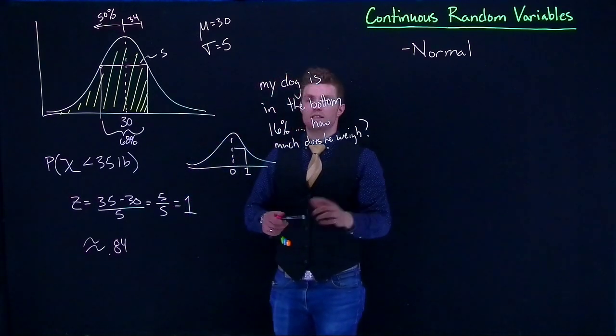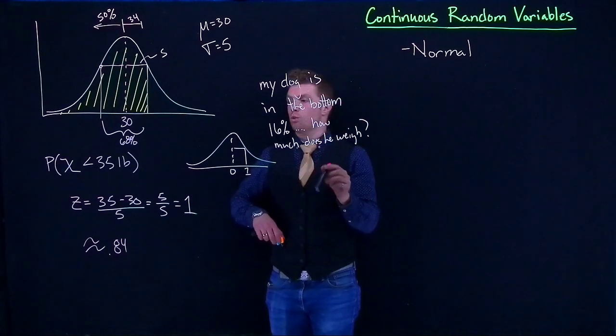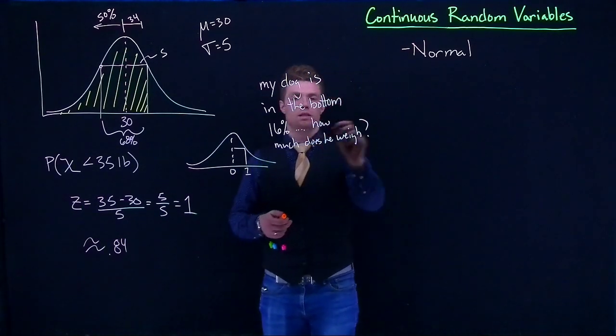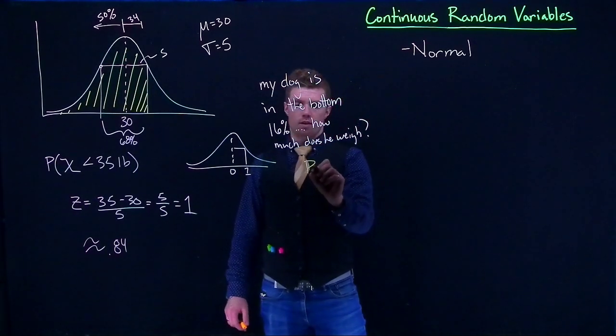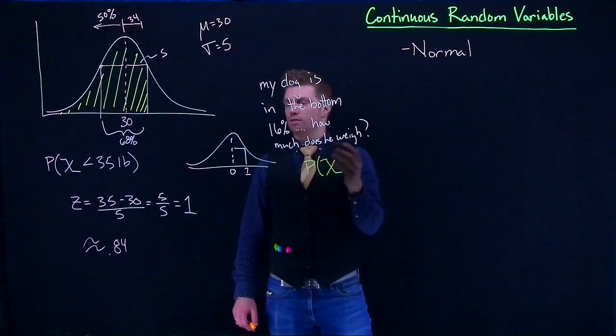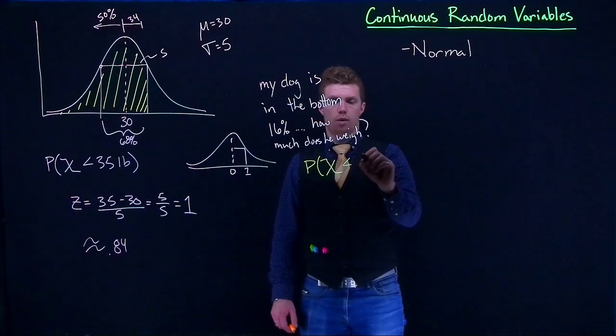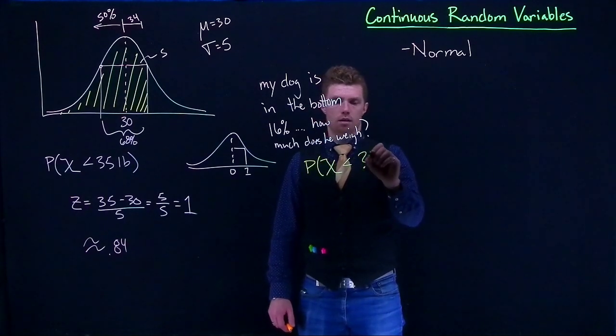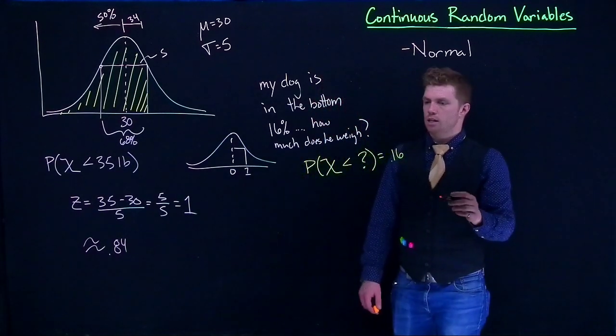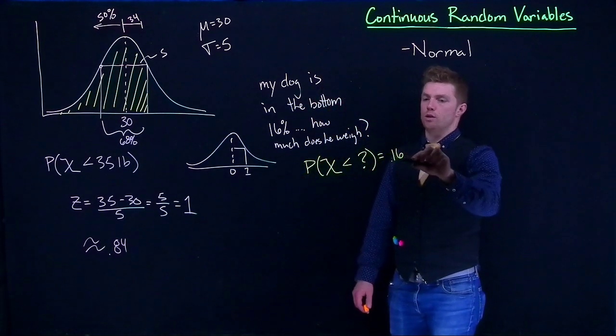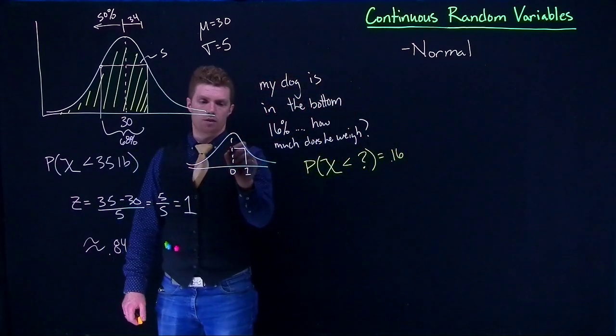Well that's no big deal. Let's kind of start off with our standard normal and then we're going to work backwards because what we're really looking for, this whole thing can translate to this statement. So we've got the probability of a random event of selecting a dog is going to be less than question mark, and it's going to equal 0.16. So we need to kind of figure this out backwards. We've got to figure out the area under the curve here to get to 0.16.